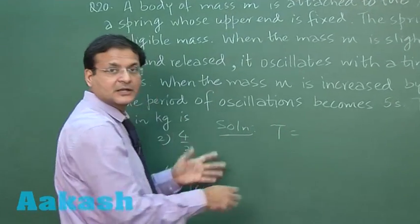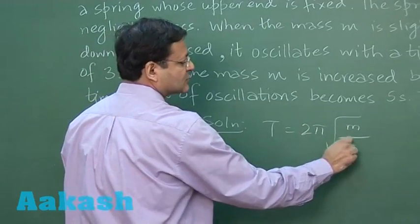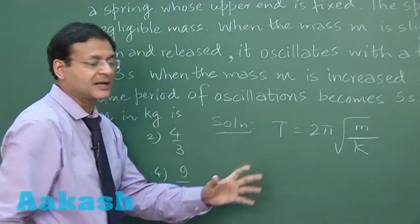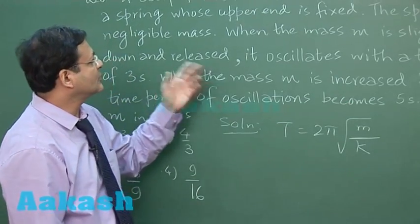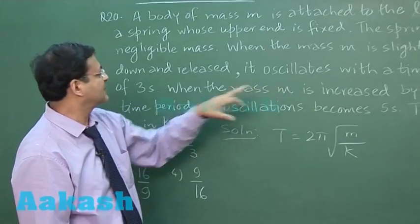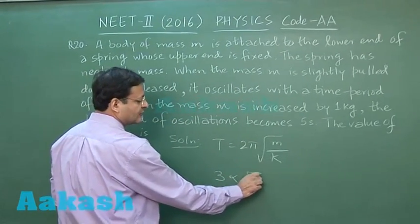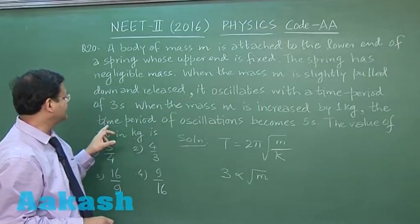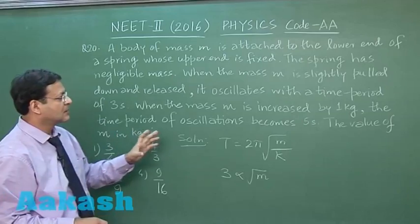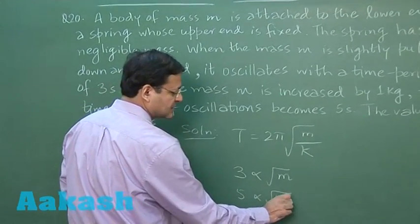For a spring mass system, the expression for time period of oscillation is 2π√(M/K). Remember that this time period is directly proportional to square root of mass. It oscillates with a time period of 3 seconds, so 3 is proportional to √M. When M is increased by 1 kg, the time period becomes 5 seconds, so 5 is proportional to √(M+1).